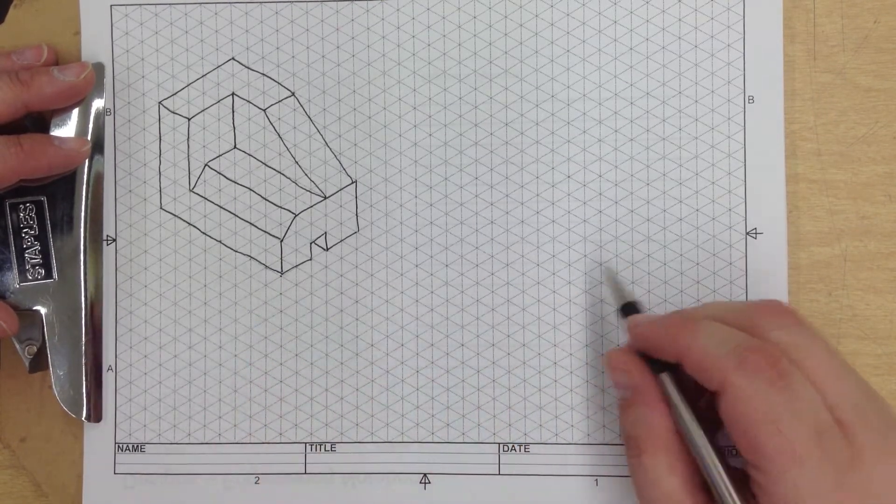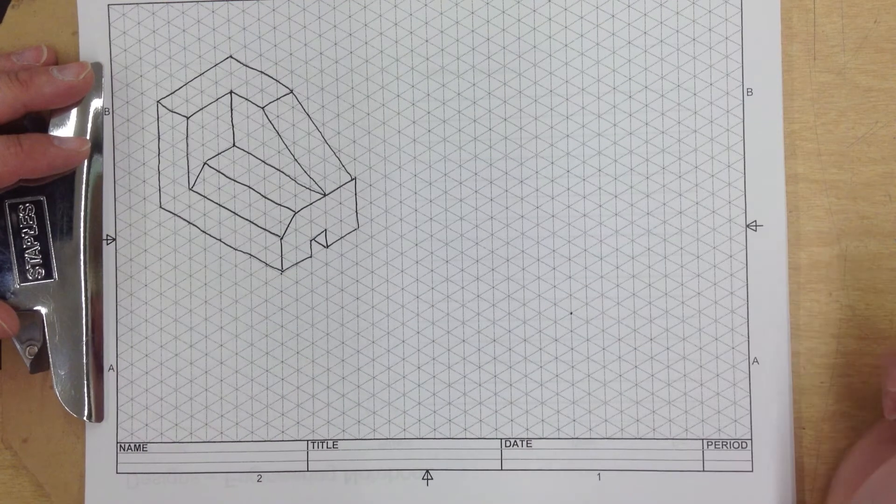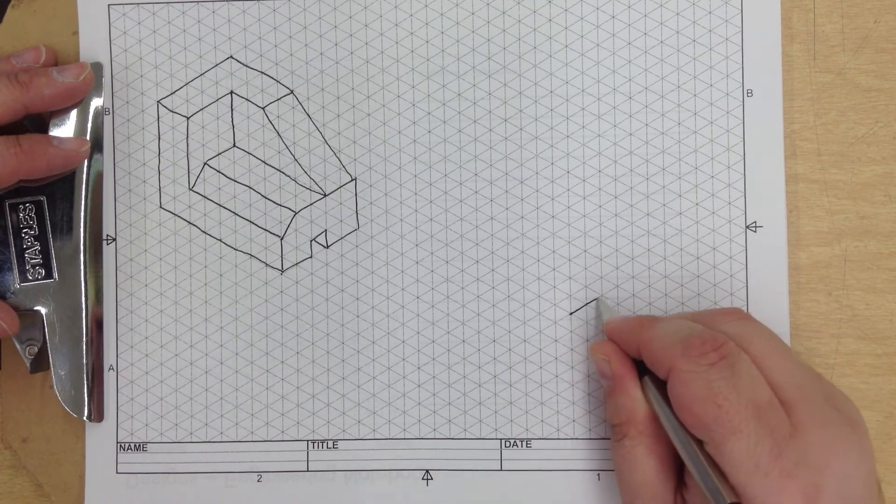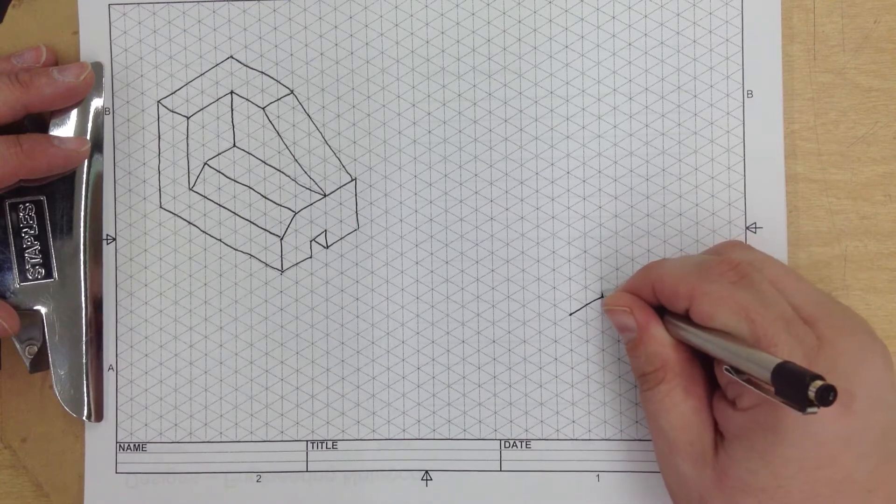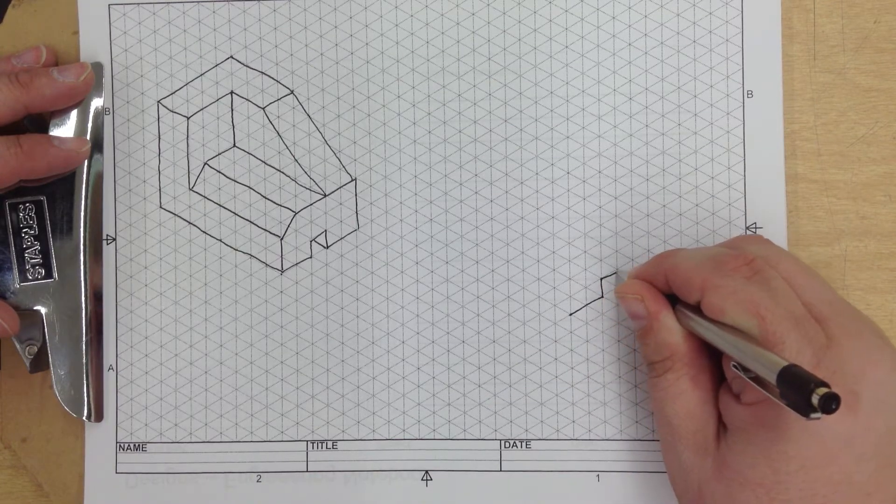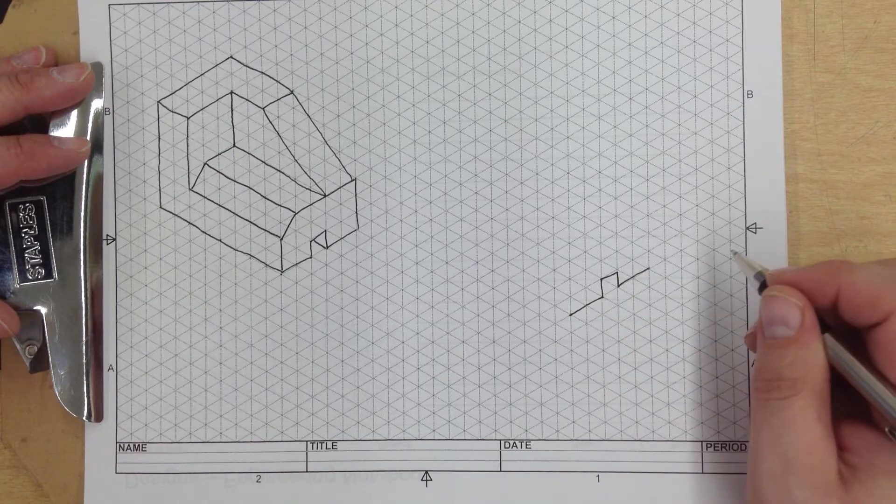Let's go ahead and start with our origin point, which I'm going to put my origin point right there. And we go two over, one up, over, down, then two over more.